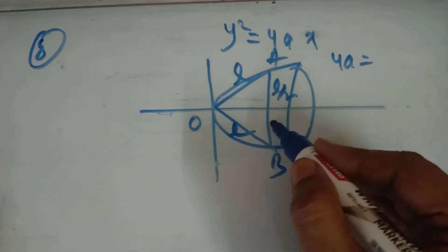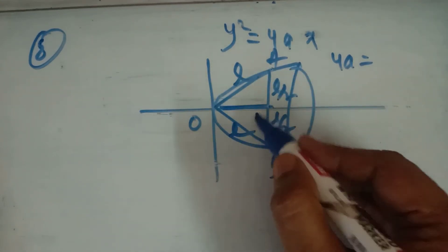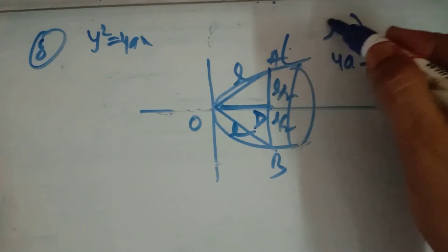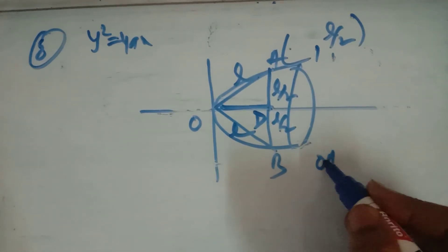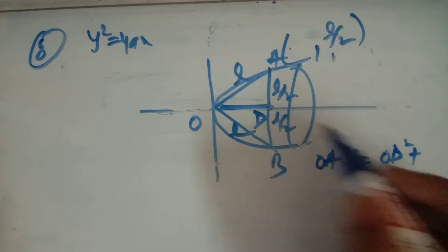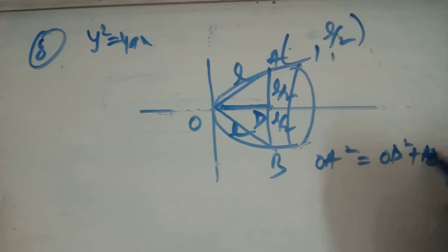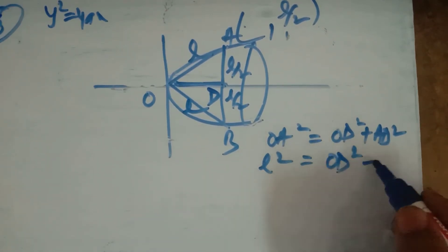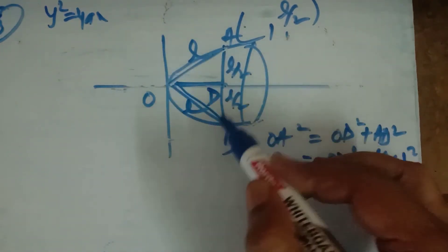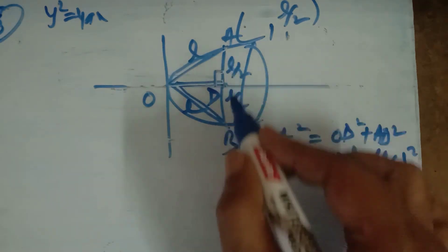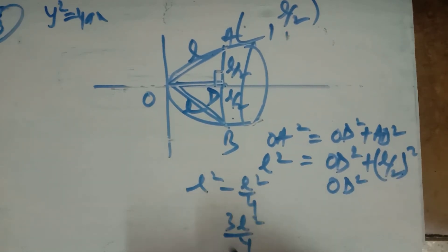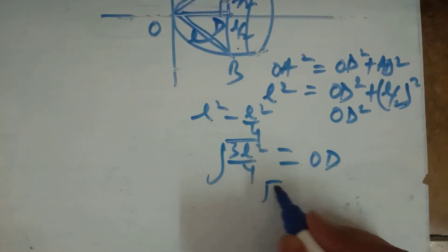So C से यह L/2 and L/2 होगा। In the equilateral triangle, the altitude bisects the base, so AD = L/2. Using the Pythagorean theorem: OA² = OD² + AD², with OA = L and AD = L/2. So OD² = L² − L²/4 = 3L²/4, therefore OD = √3L/2.